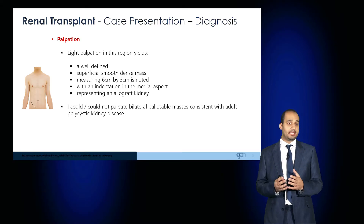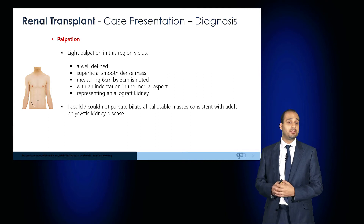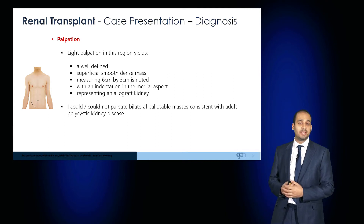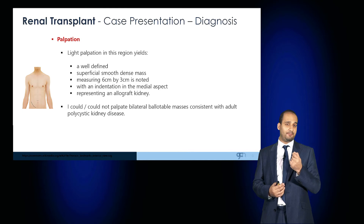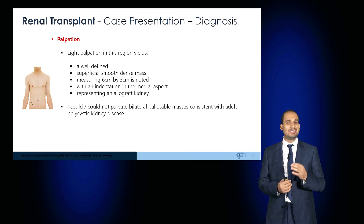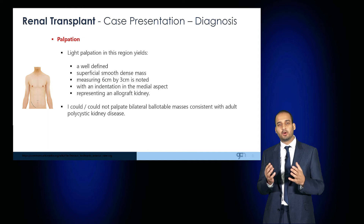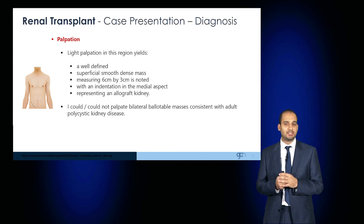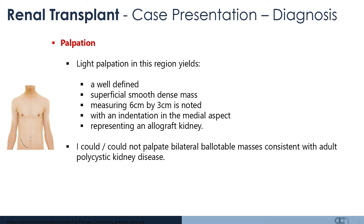When you palpate, particularly over the Rutherford-Morrison scar, you would note a well-defined superficial dense mass which would measure approximately 6 by 3 centimeters with an indentation in the medial aspect. That would represent the transplant allograft kidney. You should aim to palpate and ballot the kidneys. If the kidneys are large and ballotable, this may be consistent with the etiology of polycystic kidney disease which led to end-stage renal failure leading to the transplant.